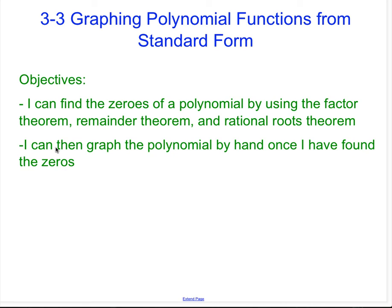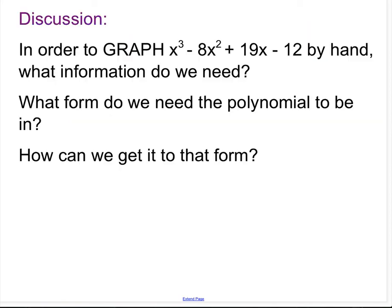In section 3-3, we are graphing polynomial functions from standard forms. Basically, we're doing what we did in section 1 to get the factors and find the zeros, then using what we learned last time in section 2 to figure out the multiplicity and the end behavior, and then we're going to graph it. This first slide isn't in your notes — it is just what I just said.